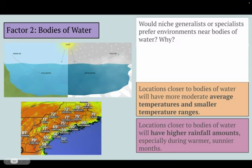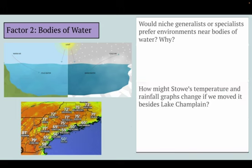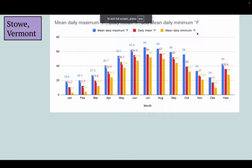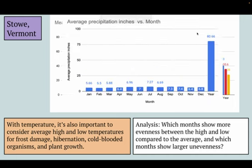My first question for you is: would niche generalists or specialists prefer environments near bodies of water, and why or why not? And secondly, how might Stowe's temperature and rainfall graphs change if we moved ourselves right next to Lake Champlain — say where Burlington is? You want to be really specific with the changes you're making to both graphs in terms of numbers.